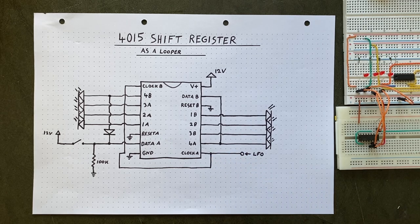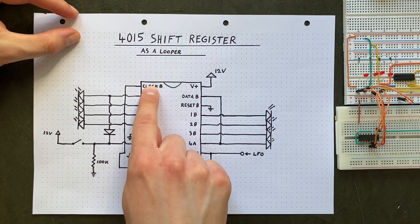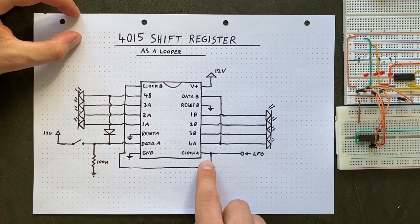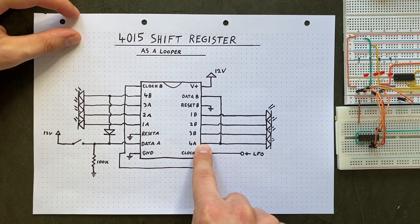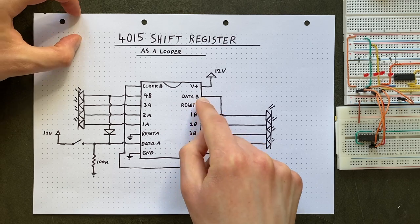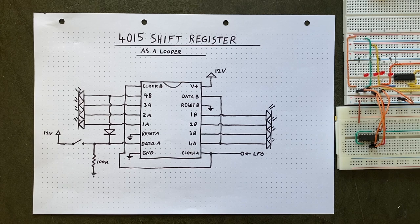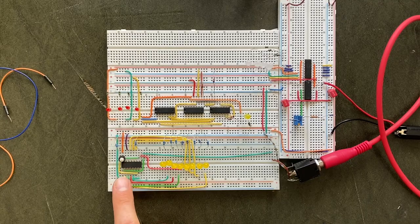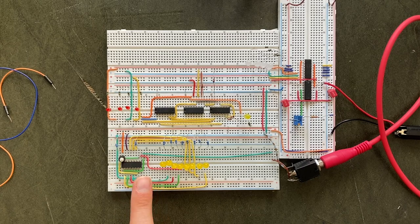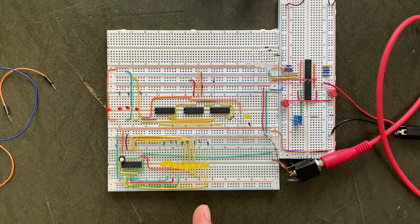Because we want to use both registers instead of just one, I've connected the clock inputs together. And I also send the last output of the first register to the data input of the second register. This way we are basically chaining them to form a single 8-bit register. Let's check it out in built form. Now if I push this button, we should see a nice 8-step wave across these diodes. And yeah, it does work.